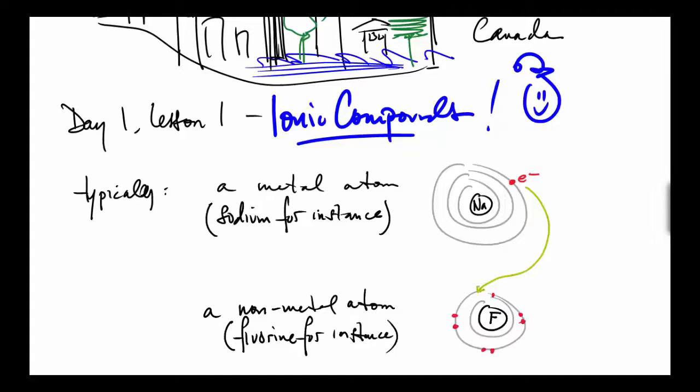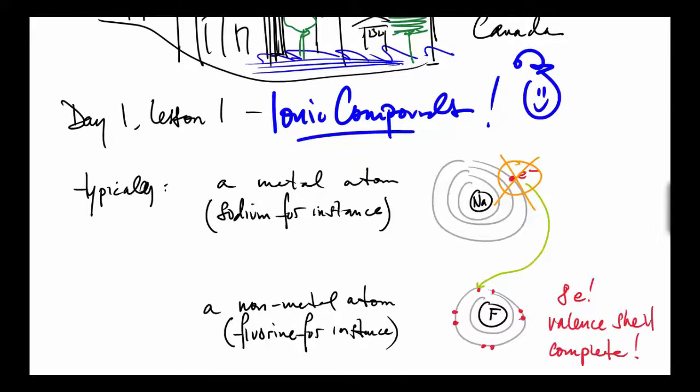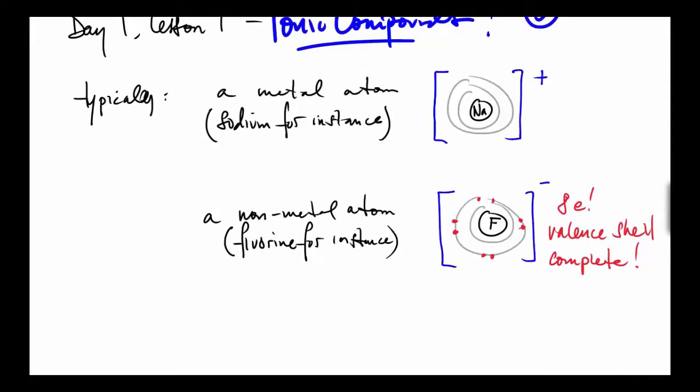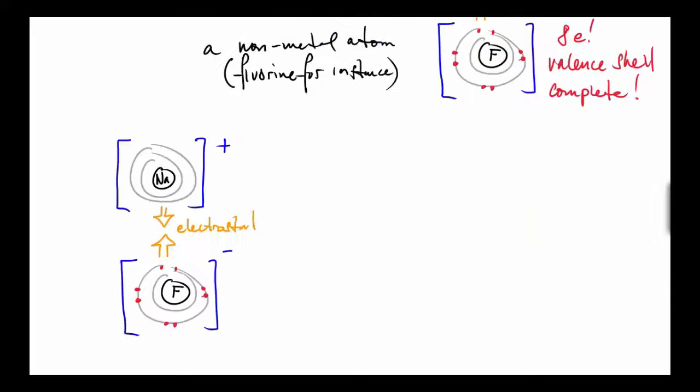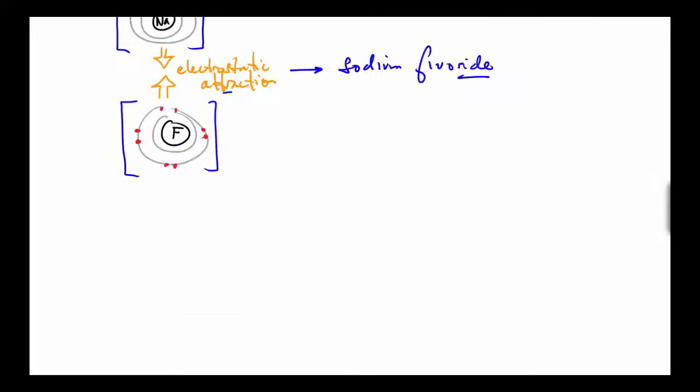Fluorine has seven valence electrons, sodium has one. In the tug of war, sodium loses and fluorine gets sodium's electron. Now it has eight and a valence shell that's complete. The resulting atoms now become ions with electrostatic attraction between them—that's from Coulomb's law. Once they're joined together this way, this becomes a compound we call sodium fluoride.